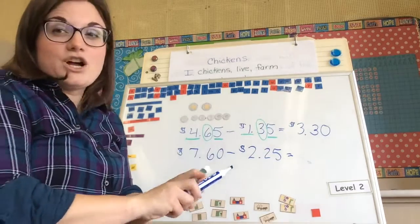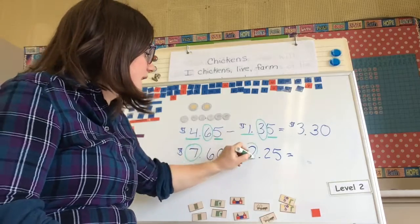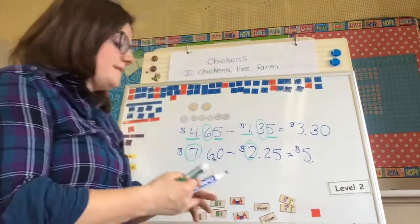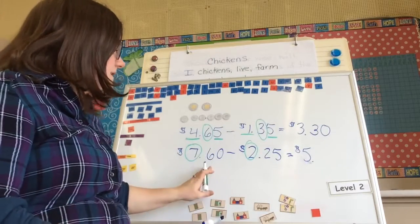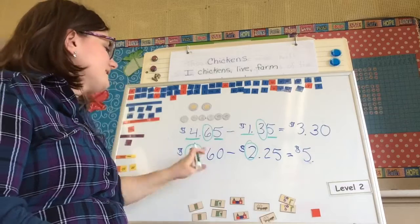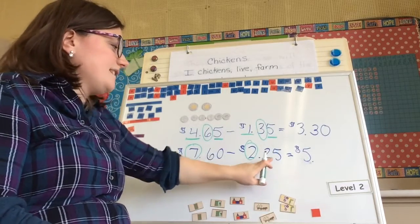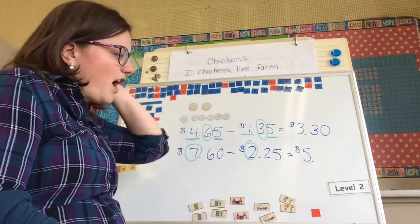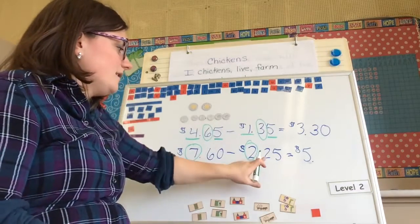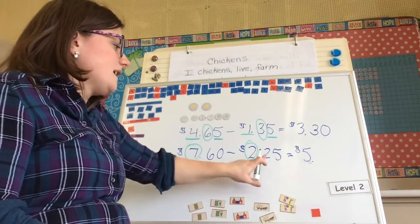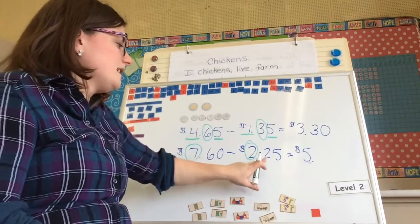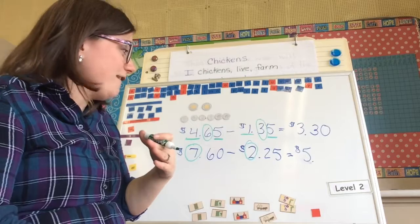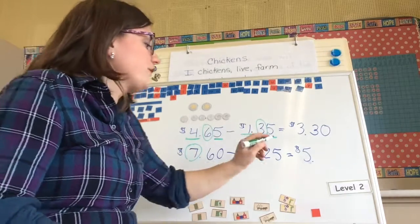We're going to start with our dollars. $7.00 take away $2.00 gives me $5.00. Now for the cents — you'll notice there are no ones in this. So we think of $0.60 and taking away $0.25 from it. $0.60 take away $0.20 gives me $0.40, but I still have to take away $0.05. Counting back from $0.40 by $0.05 gives me $0.35.